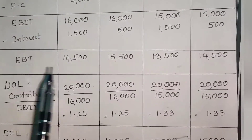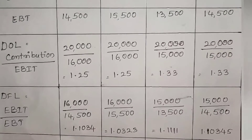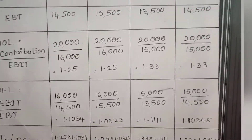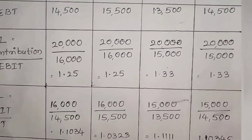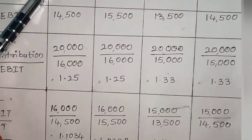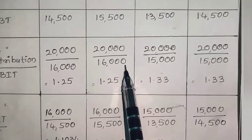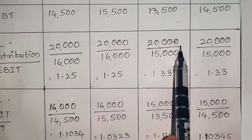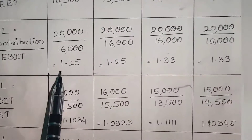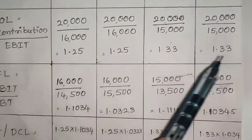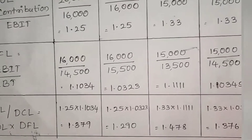Now calculate the degree of operating leverage, financial leverage and total leverage. Degree of operating leverage formula is contribution divided by EBIT. Contribution is ₹20,000 and EBIT is ₹16,000, so 20,000 divided by 16,000. In situation 2, contribution is ₹20,000 whereas EBIT is ₹15,000. We get degree of operating leverage as 1.25, 1.25 for situation 1 and 1.33 for situation 2.